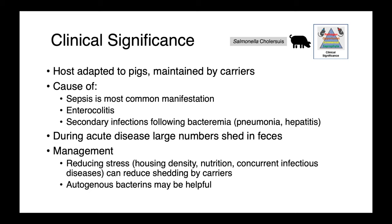Salmonella cholera suus is host adapted to pigs and maintained by carriers. It's a cause of sepsis, which is the most common manifestation, enterocolitis, and a wide variety of secondary infections following bacteremia. During the acute phase, large numbers of organisms are shed in the feces, facilitating transmission to other animals. Management is about reducing stress, appropriate housing density, good nutrition, and controlling concurrent infectious diseases. Autogenous bacterins — bespoke vaccines made to a particular strain isolated from the farm — may also be helpful.